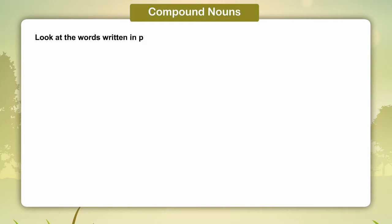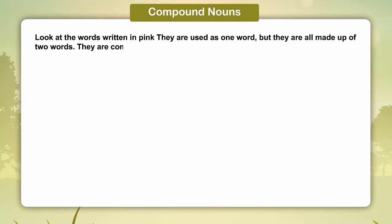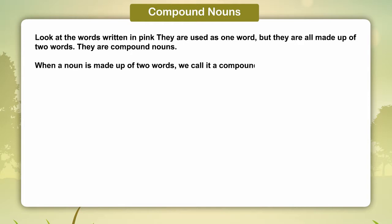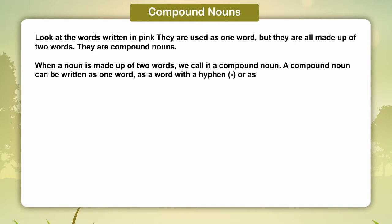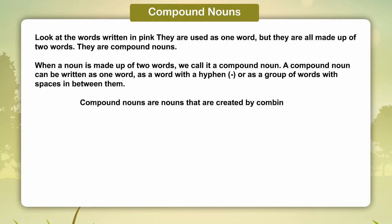Look at the words written in pink. They are used as one word and they are all made up of two words. They are compound nouns. When a noun is made up of two words, we call it a compound noun. A compound noun can be written as one word, as a word with a hyphen, or as a group of words with spaces in between them.